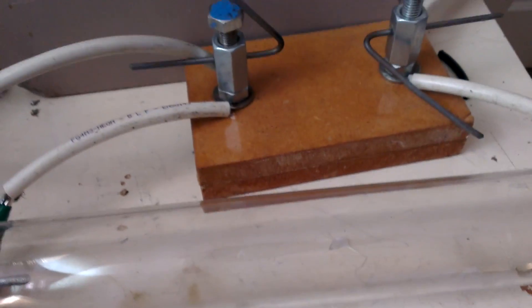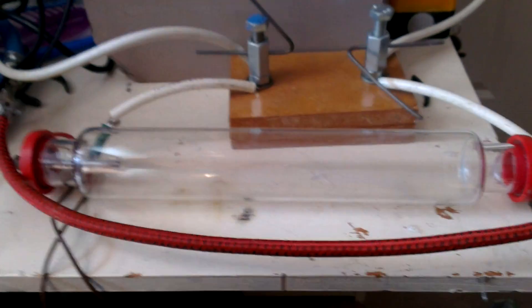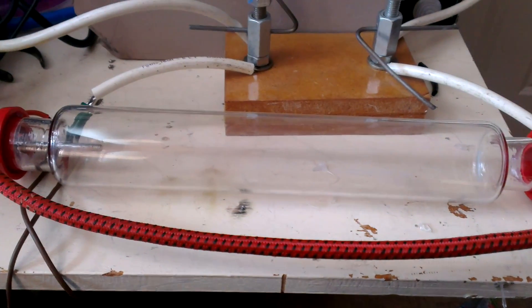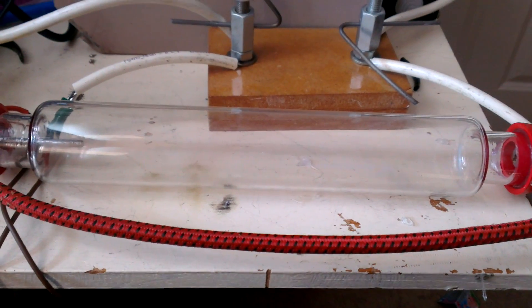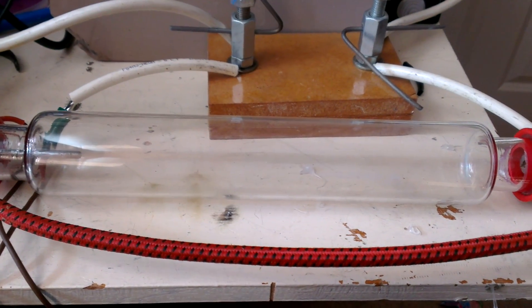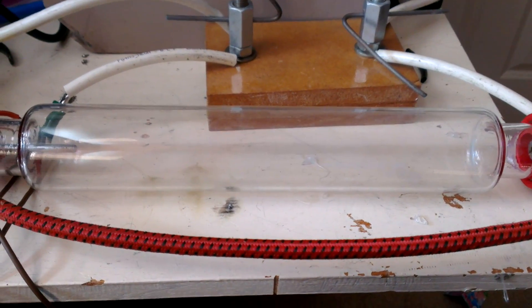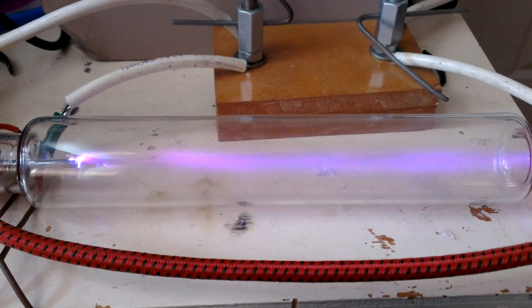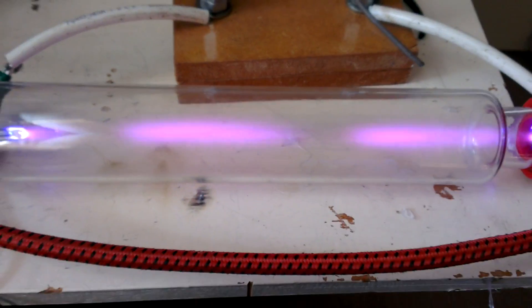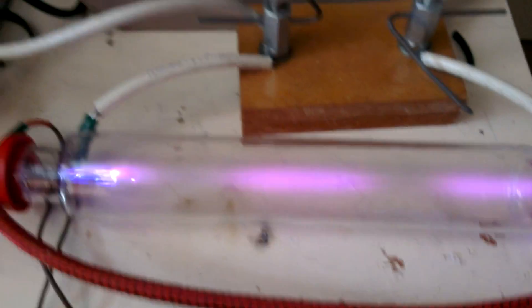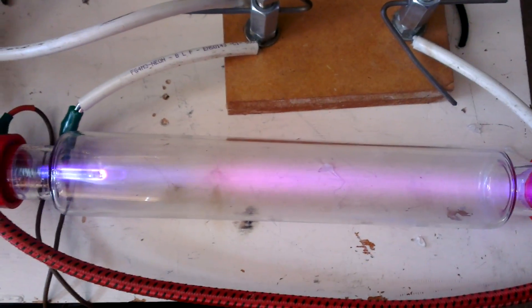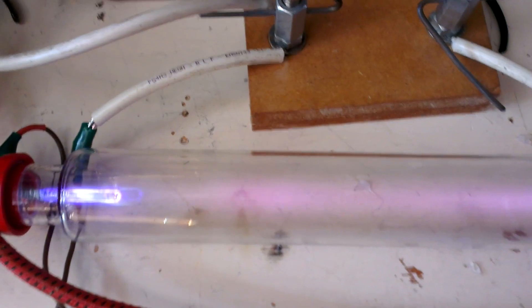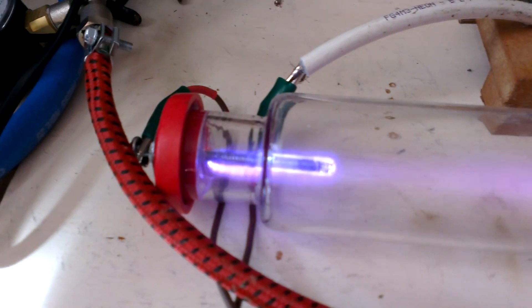The transformer's on and as you can hear the vacuum is on. Let's see what happens, if anything at all. Oh yeah, I'm getting a very faint glow and lots of corona around the actual electrode itself.